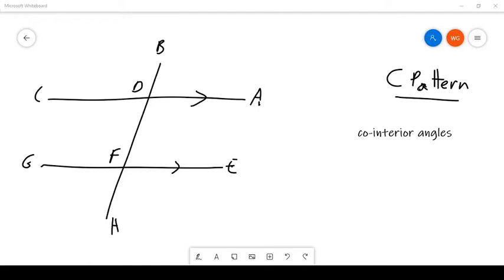Okay, good afternoon again, class, and we're going to talk now about the C pattern, which is the last of our grade 9 parallel line theorem angle patterns that we need to know.